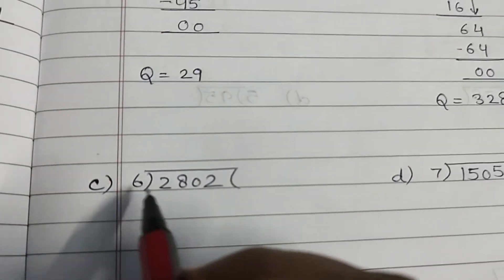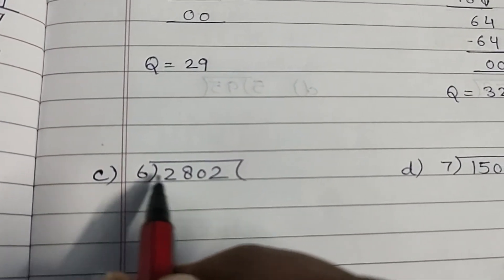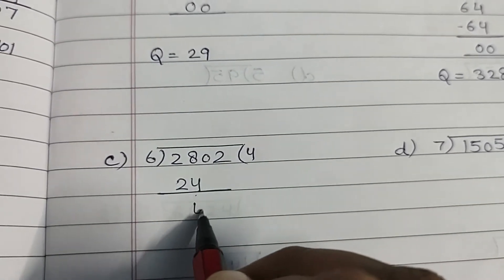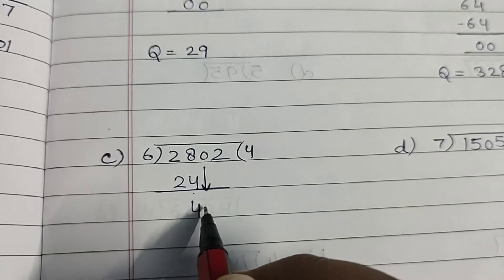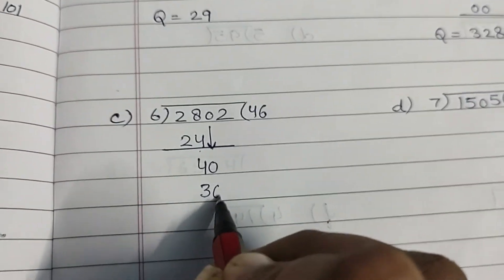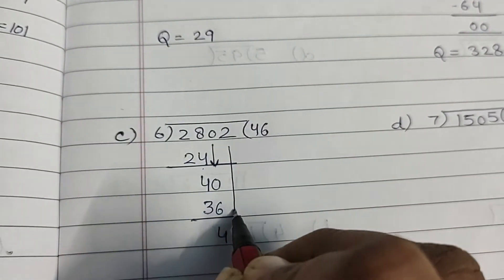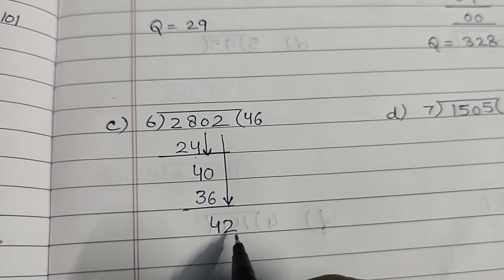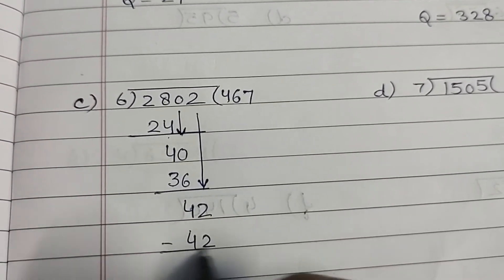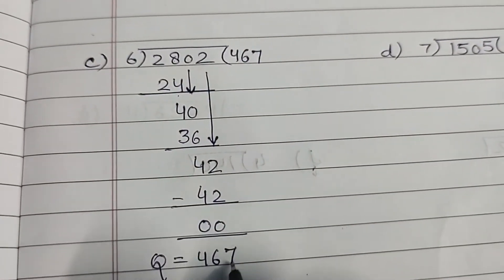Now next is 2802 divided by 6. 2 is small, so we'll take both digits. 6×4 is 24. 28 minus 24, 4. Bring 0 here, ho gaya 40. 6×6, 36. 40 minus 36, 4. Bring this 2 down, ho gaya 42. 6×7, 42. Minus karenge, 0. Quotient ho gaya 467.